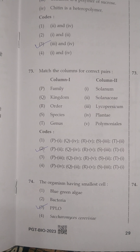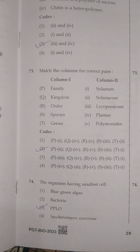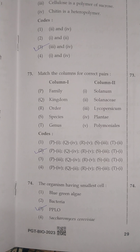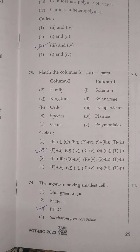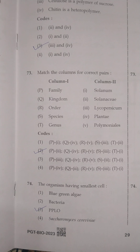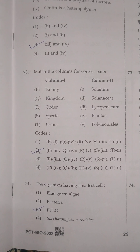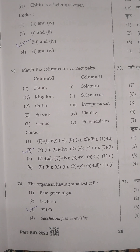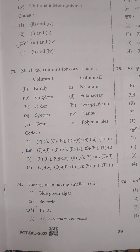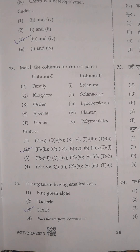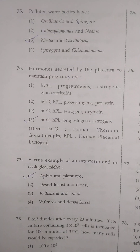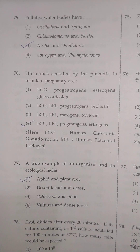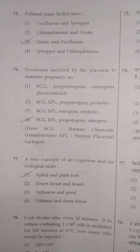The next question was related to kingdom classification systems. Its correct option is option 2: family is Solanaceae, kingdom is Plantae, order is Polemoniales, genus is Solanum, and species is lycopersicum. The next question: organisms having the smallest cell — these organisms are PPLO, pleuropneumonia-like organisms. The next question: polluted water bodies — option 3 is correct: Nostoc and Oscillatoria.